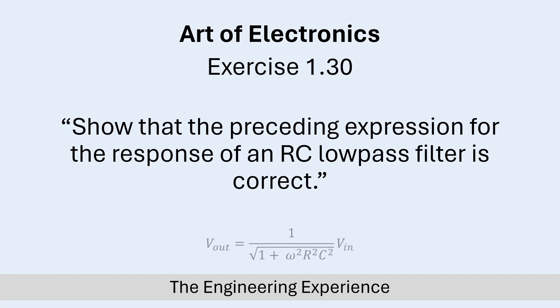The expression that the question is talking about is on the screen now, which is V_out equals 1 over the square root of 1 plus ω²R²C² multiplied by V_in. This is basically the response in magnitude, so ignoring the phase of a low-pass RC filter.